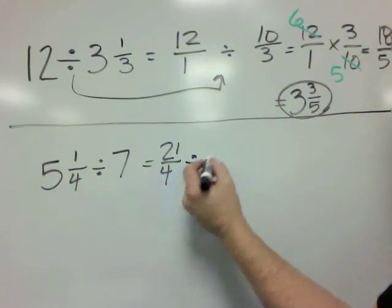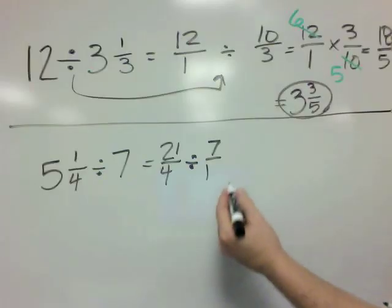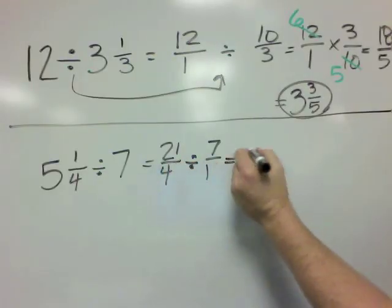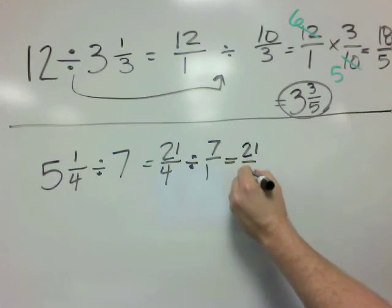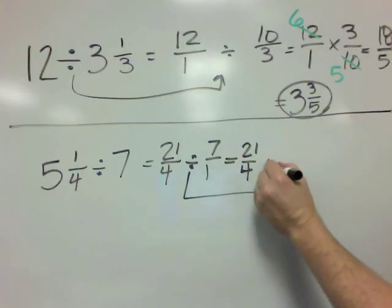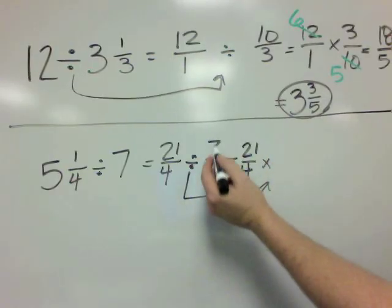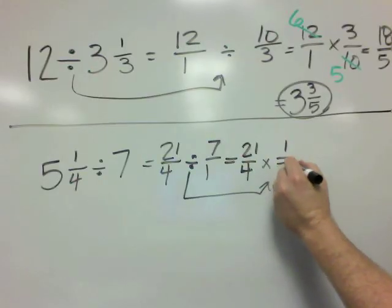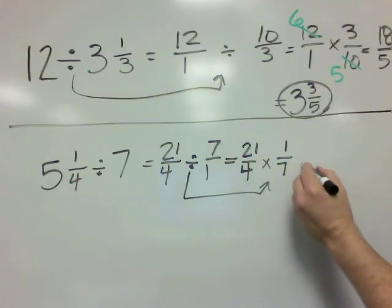And then next step, the first fraction stays the same, the division symbol turns into multiplication, and then the 7 over 1 becomes 1 over 7.